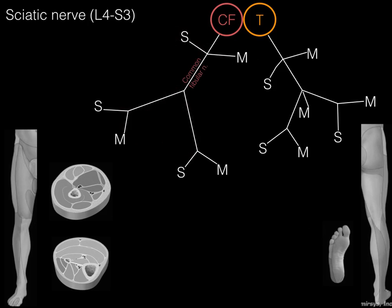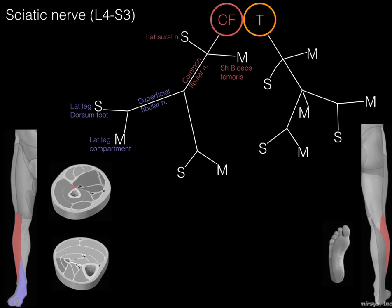Clara Faye stands for the common fibular nerve, also known as the common peroneal. The sensory component of the common fibular nerve is the lateral sural nerve, which provides cutaneous sensation to the lateral part of the leg. The motor component is the short head of the biceps femoris off the linea aspera. The word 'common' means it will bifurcate. The first branch is the superficial fibular nerve, also known as superficial peroneal. Its sensory distribution is the lateral leg and the dorsum of the foot. Its motor component is the lateral leg compartment muscles — peroneus longus and peroneus brevis.